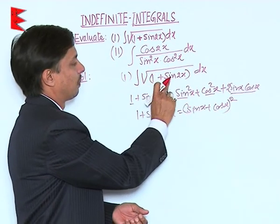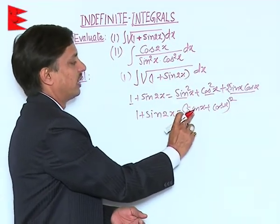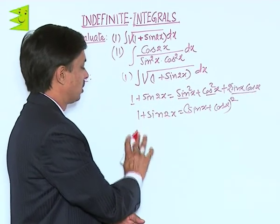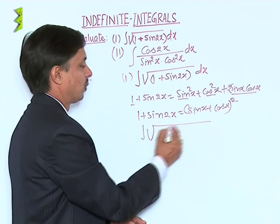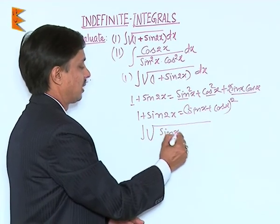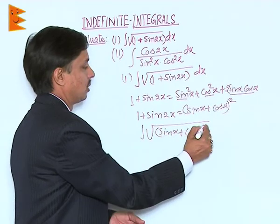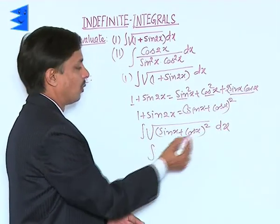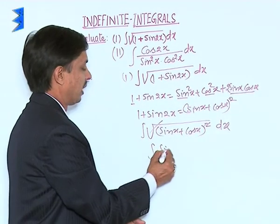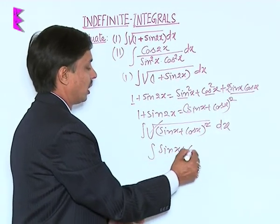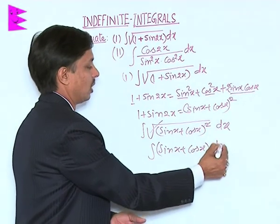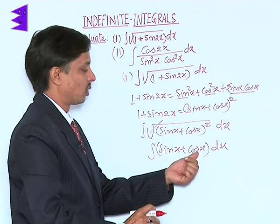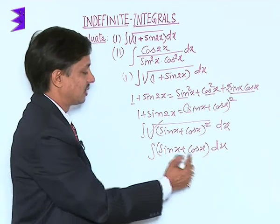So ultimately in place of 1 plus sin 2x we can write (sin x plus cos x) whole square. The integration becomes the root of (sin x plus cos x) whole square dx. The square and root cancel, so we need to evaluate the integration of sin x plus cos x dx.